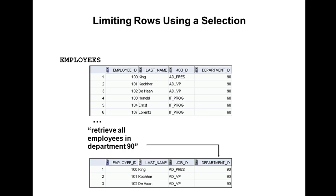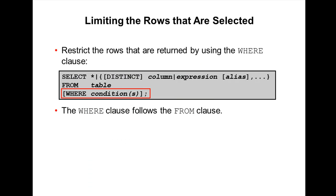Suppose I have a table called the employees table, and in that table there is a column called department ID. I want to retrieve the records for employees who are in department ID 90. So how do we display that? The answer is the WHERE clause. The WHERE clause is used to restrict the number of rows based on some conditions, and the WHERE clause always should come after the FROM clause.